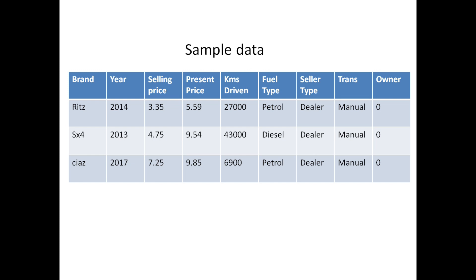Let's start this video. Look at this — this is our sample data which is actually present in the car dataset. It has nine columns. Except for the selling price, all the columns are considered as features, and using those features we are going to find out the selling price.